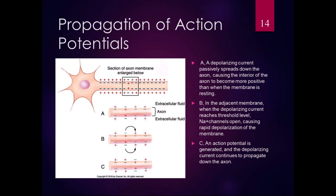The action potential is generated, and the depolarizing current continues to propagate down the axon. Each section opens more and more sodium channels as it goes down. Those sodium channels open and then close, and then the next set opens and closes, and the next set opens and closes. That propagates the action potential down the axon.